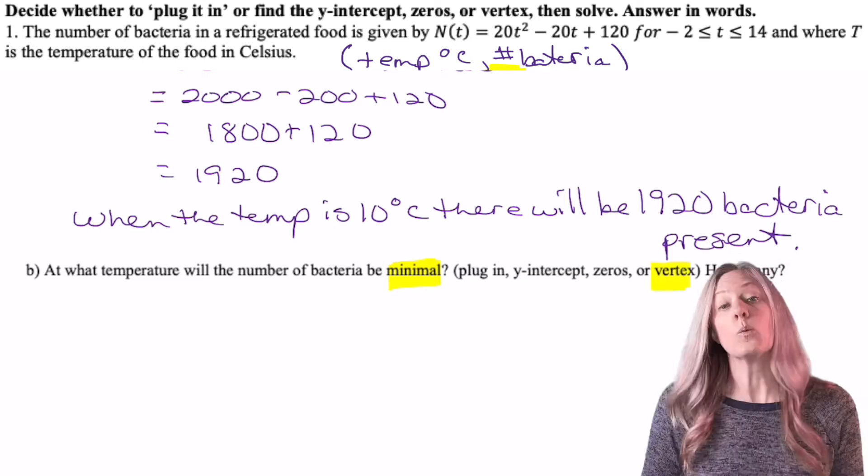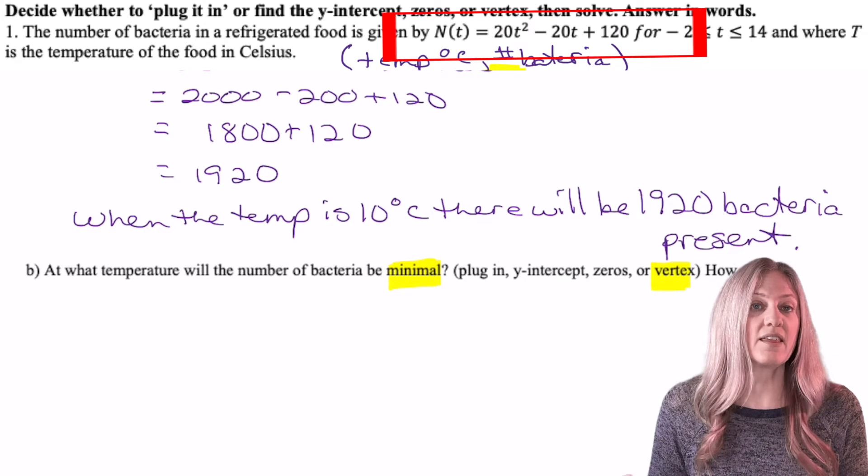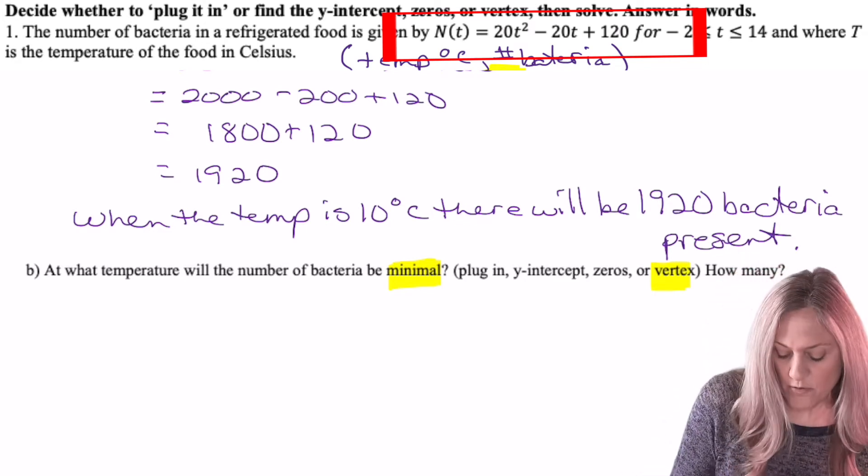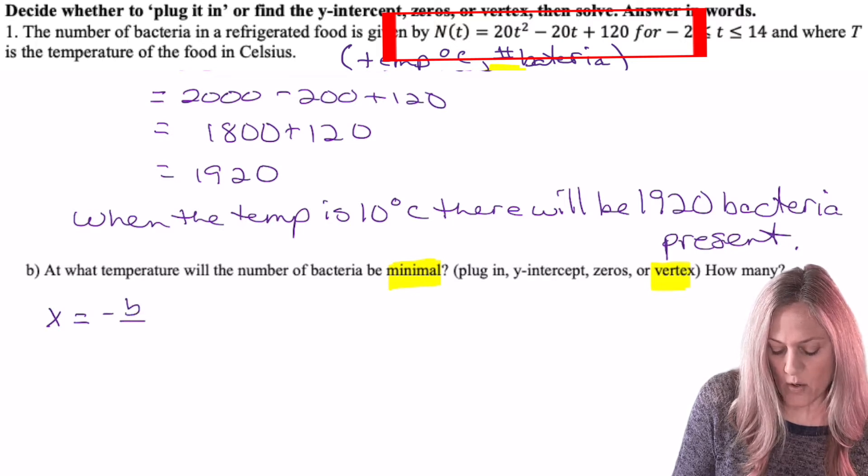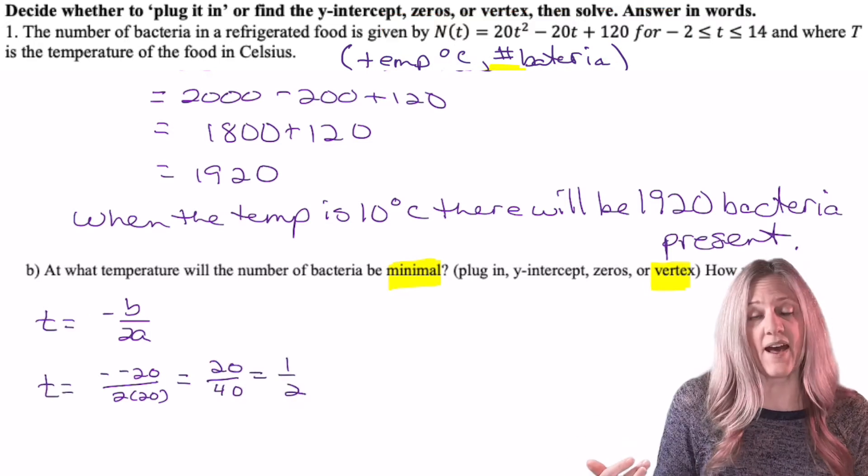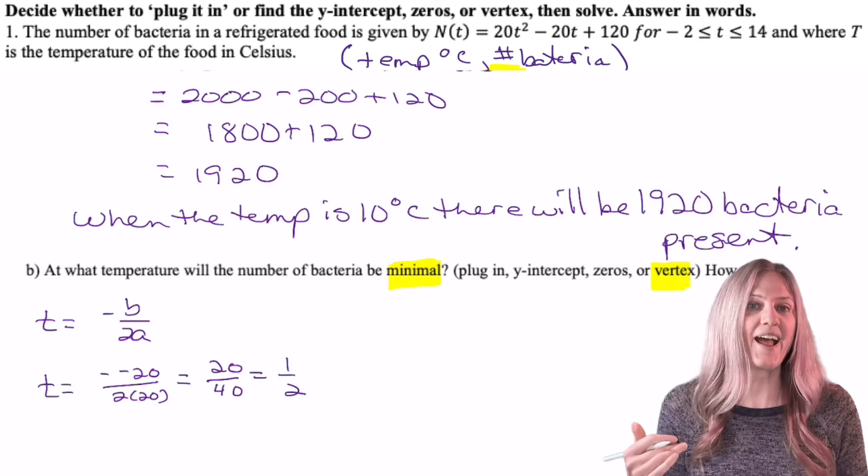So that's what I need to find. We're given the equation in standard form. In order to find the location of the min or max, I need the x-axis. So from standard form, remember, x equals negative b over 2a. So t is one-half, and remember what our input is. One-half t is one-half degrees Celsius.